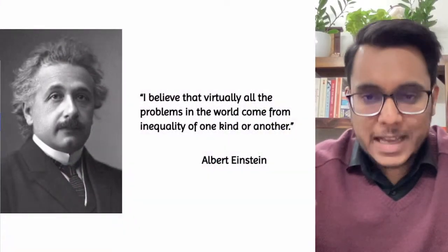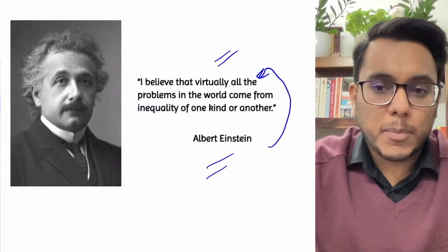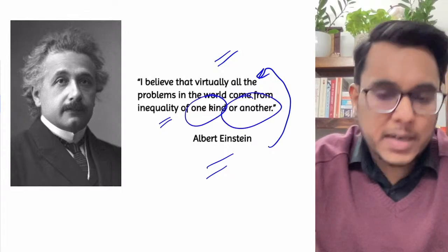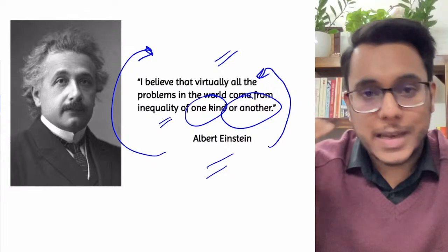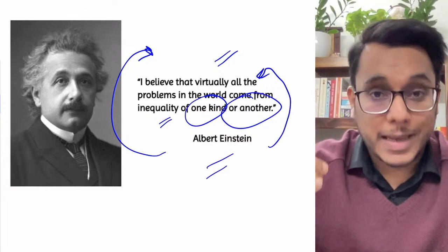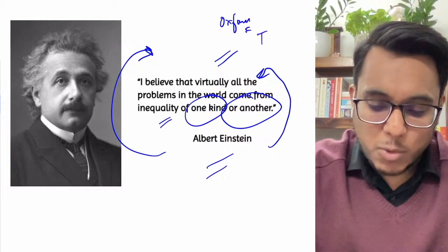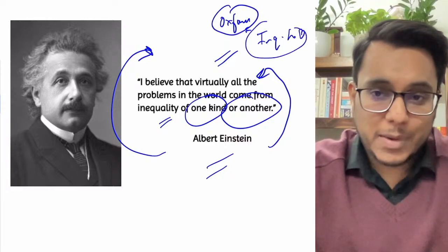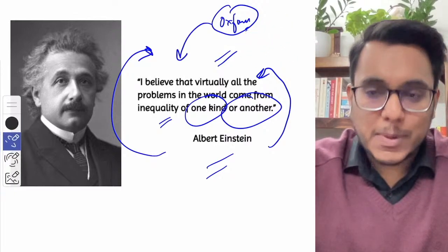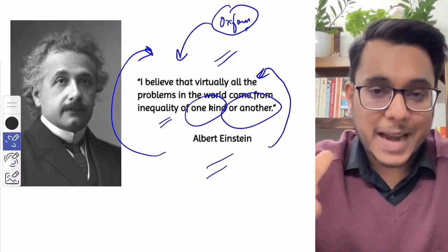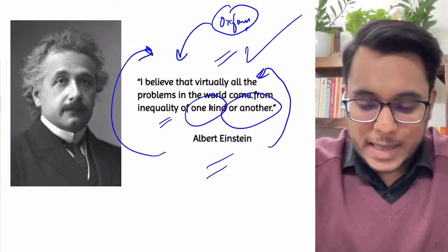Every class we take a GS quote. Today's quote is from Albert Einstein: 'I believe that virtually all the problems in the world come from inequality of one kind or another.' Einstein said inequality is the root cause of all problems. Inequality has increased a lot during COVID-19. Recently the Oxfam Report and the Inequality Labs Report were released — the Oxfam Report said India is one of the most unequal countries, and because of inequality, hunger and poverty are persisting.